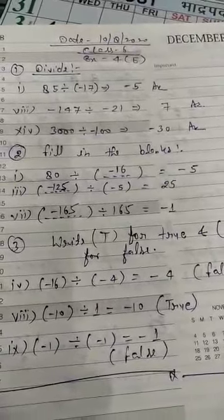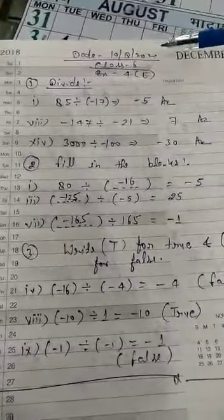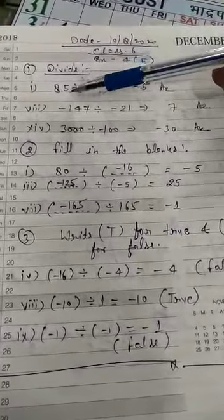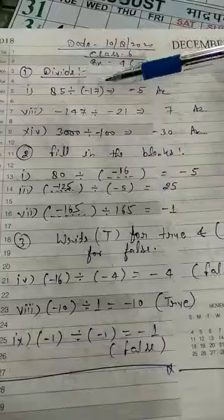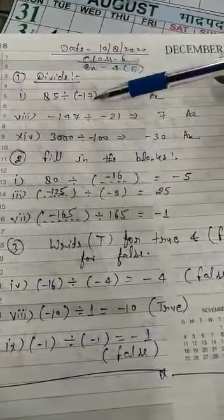Good afternoon class. Today we have started Exercise 4E. In this exercise we have to divide the numbers. We have to divide 85 by minus 17. So 17 fives are 85. 85 is positive and 17 is negative. Plus minus is always minus, so answer is negative, that is minus 5.